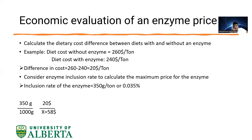If the price of the enzyme is higher than $58 per kilogram, it doesn't make sense to spend more money on a product that will give you less profit. But if the enzyme price is less than $58 per kilogram, it's great — you can use it and calculate your profit as a result of using the enzyme in the diet.